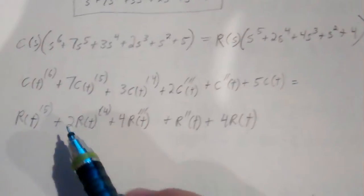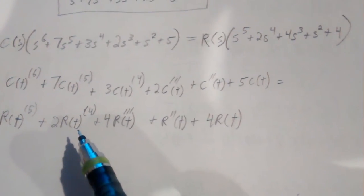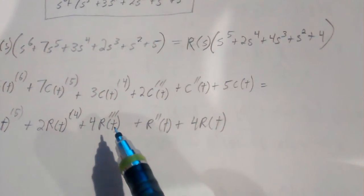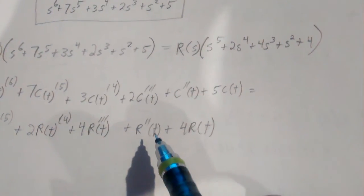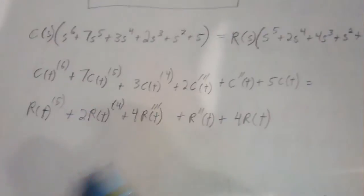And that's equal to the 5th derivative of R of T plus 2 times the 4th derivative of R of T plus 4 times the 3rd derivative of R of T plus the 2nd derivative of R of T plus 4 times R of T. And that's our differential equation.